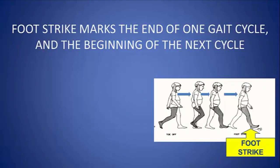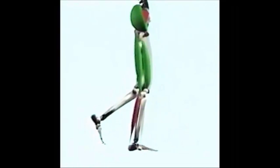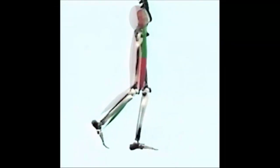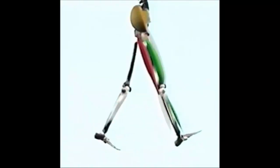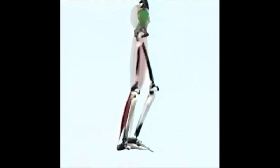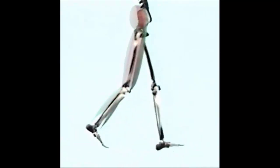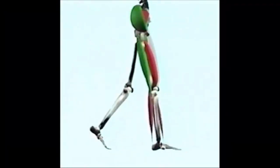Foot strike marks the end of one gait cycle and the beginning of the next. It's critical to understand these events which occur during the gait cycle, because you can look at the subject walking at each joint and identify where abnormalities are and in what phase of the gait cycle they occur. This is what we're going to focus on during the next section.